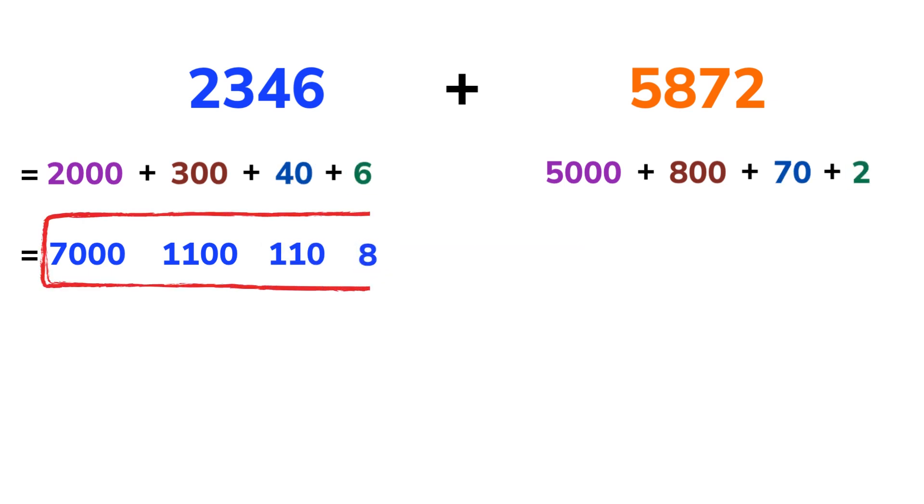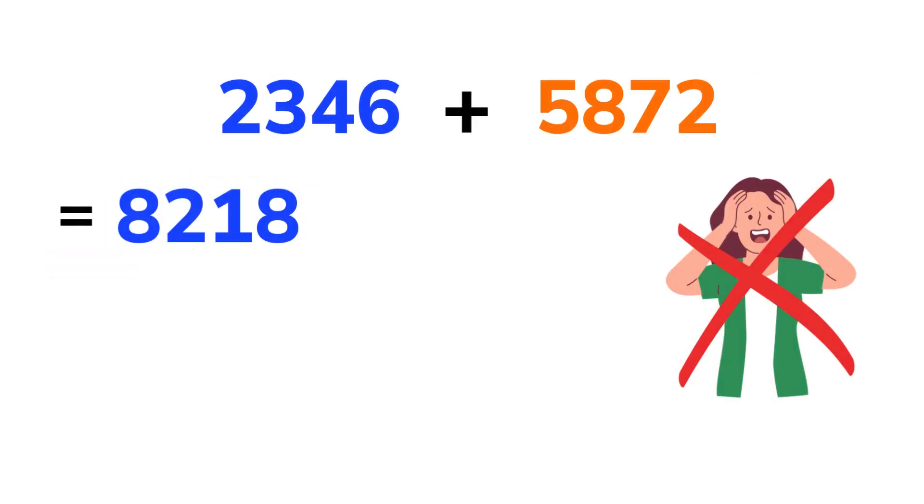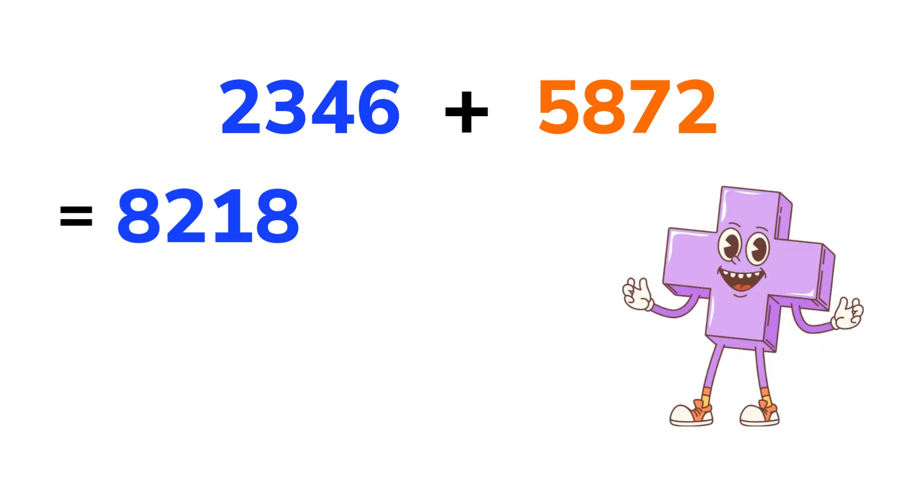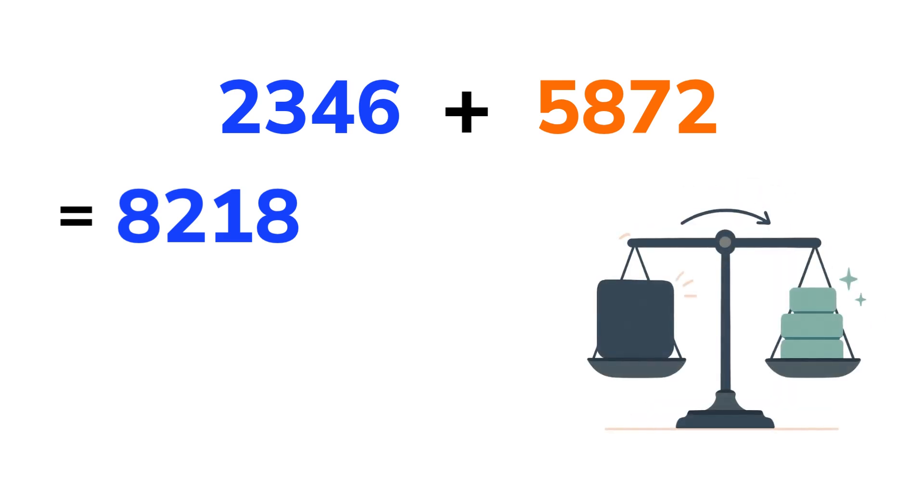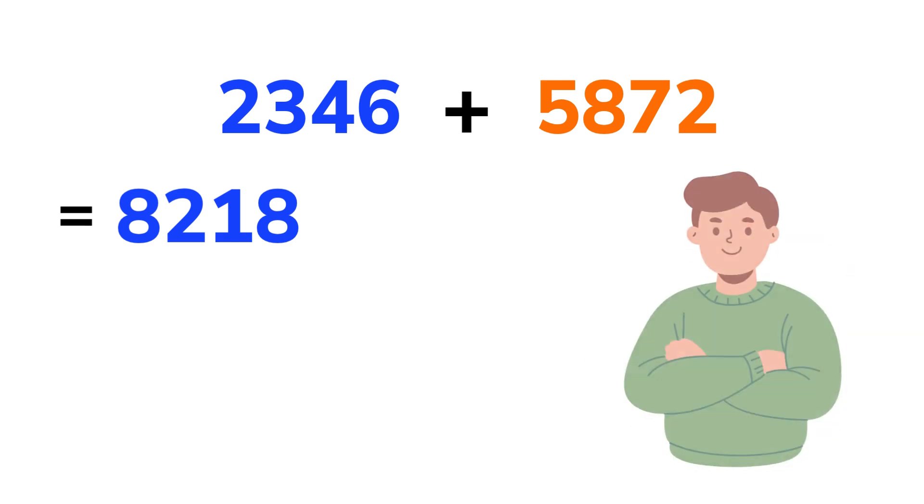Now we bring it all together. 7,000 plus 1,100 equals 8,100. 8,100 plus 110 equals 8,210. 8,210 plus 8 equals 8,218. And that's it. No panic, no pressure, just smooth and simple math. Once you get used to breaking numbers apart like this, even four-digit additions feel easy.